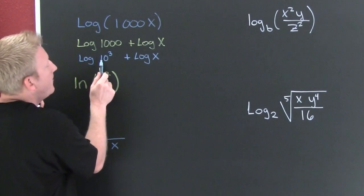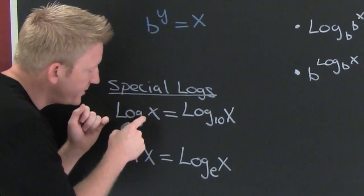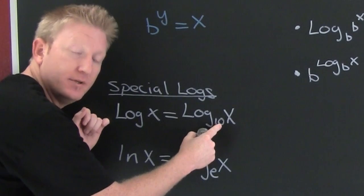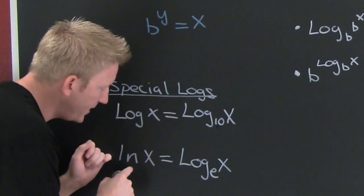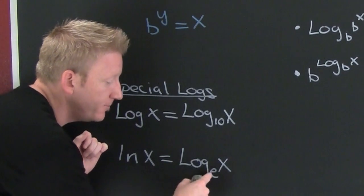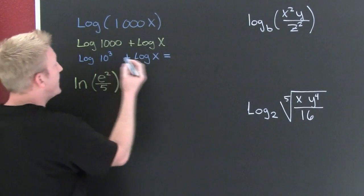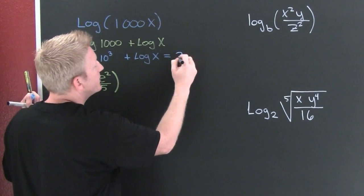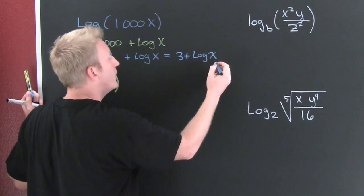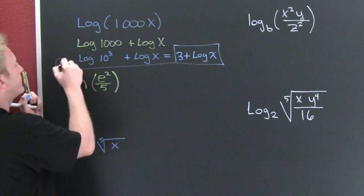Now this is one of our basic properties of logs, special logs. If there's no base written, it's log base 10, your common logarithm. We're on a base 10 system. The natural log, ln, log natural, is really log base e of x. So I can simplify that. This is going to be 3 plus log x. That gets the box and the flower.